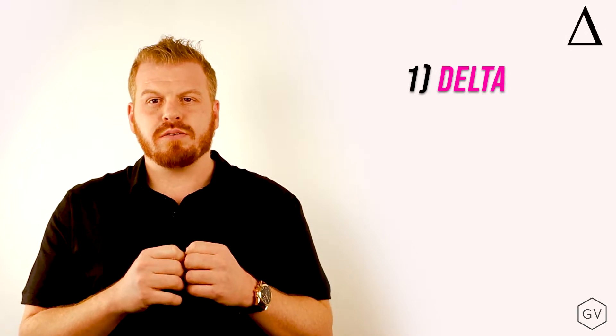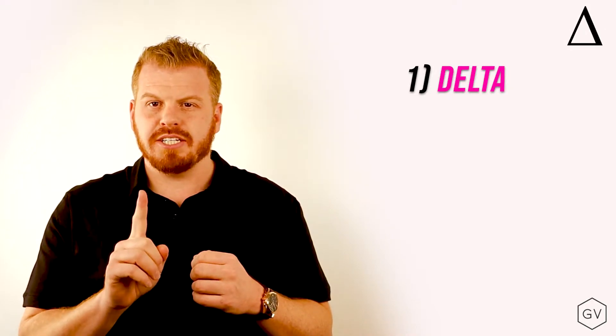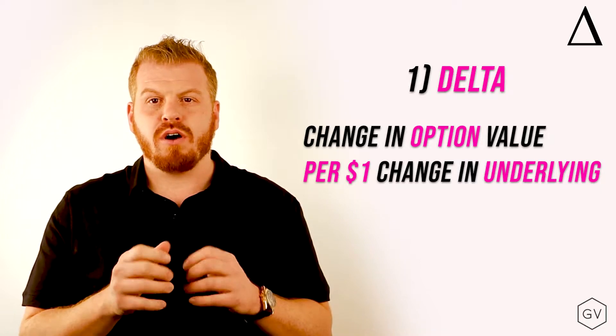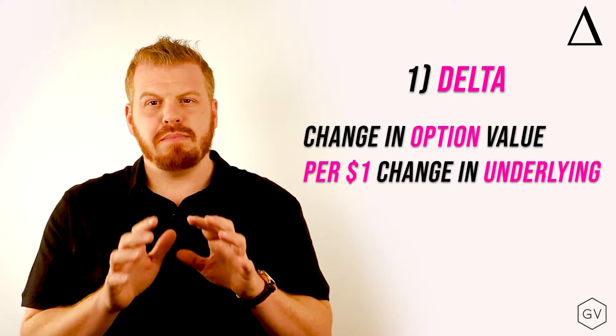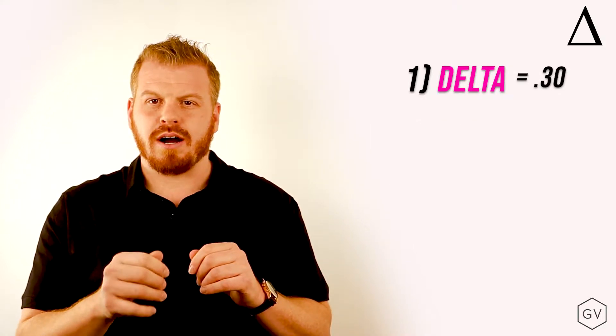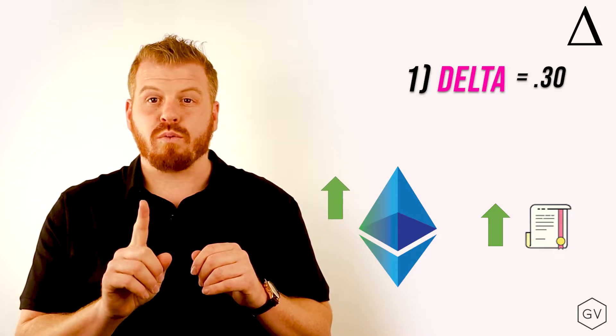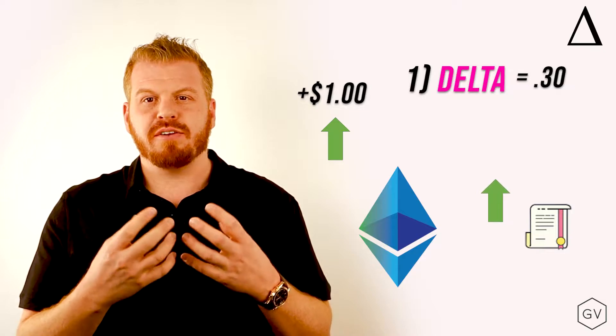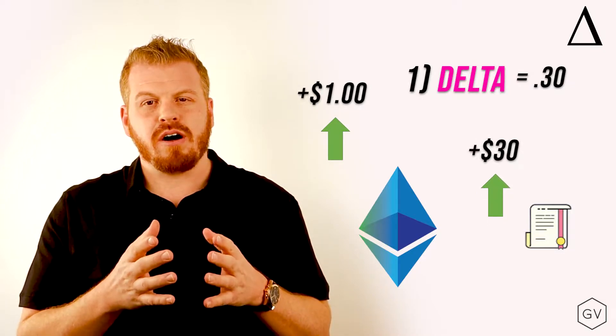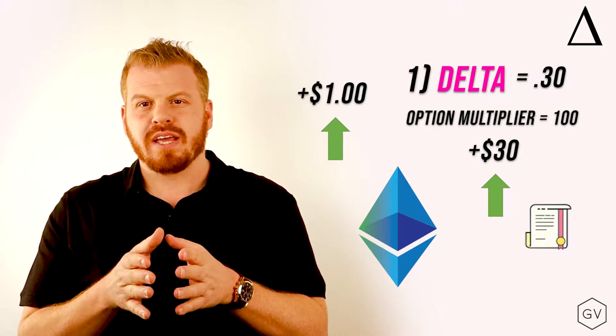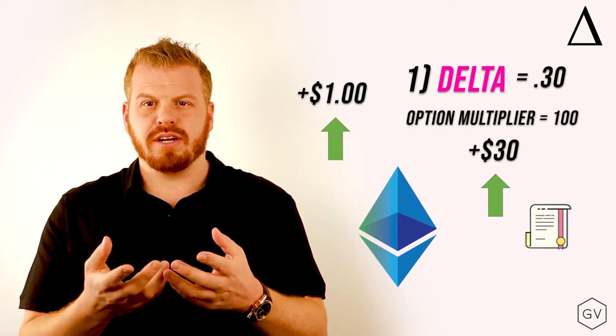The first Greek of interest is called Delta. Delta will tell us, for a $1 change in the underlying, what will be the effect on the value of the option, holding everything else constant. Meaning, if I have a 0.3 Delta on my call stock option, a 1 point or $1 rally in the underlying will increase the value of my option by $30. We get $30 because it's 0.3 times 100 shares times the 1 point rally equals $30.